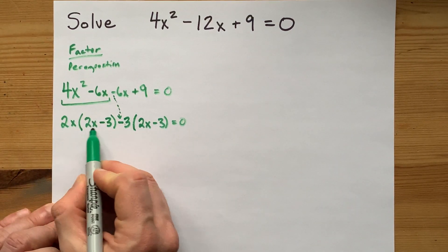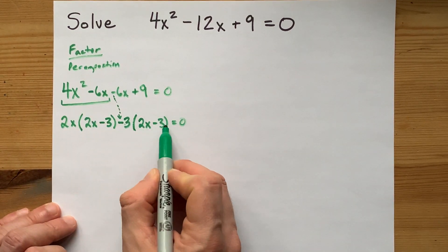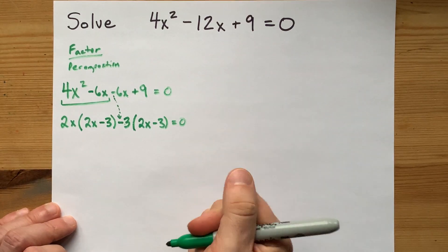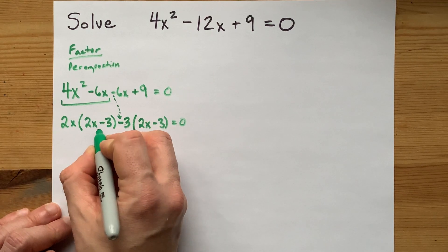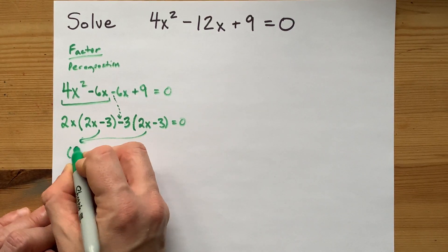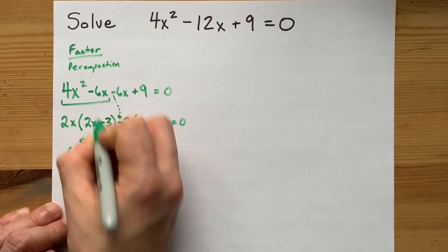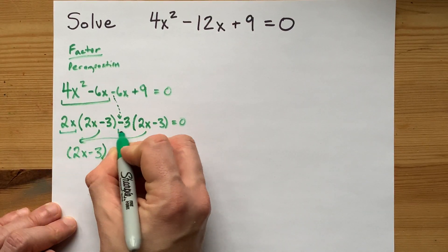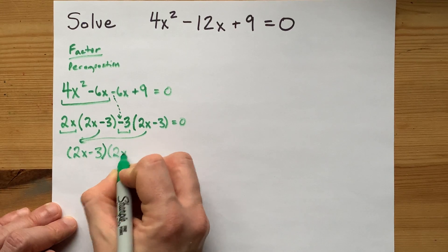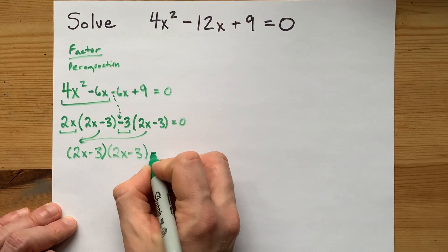This is one term, and this is one term. What do they have in common? They both have this 2x minus 3. So I'm going to pull those out as a greatest common factor, just like we did above. And then I put the leftovers into a second set of brackets. Nice. There you go.